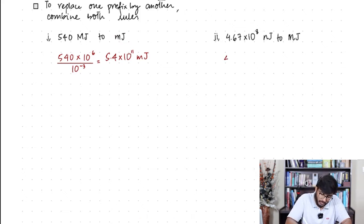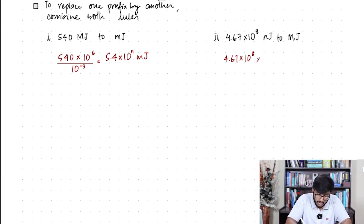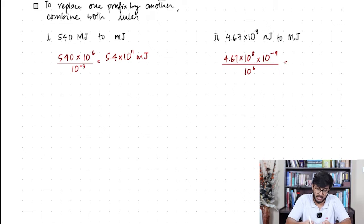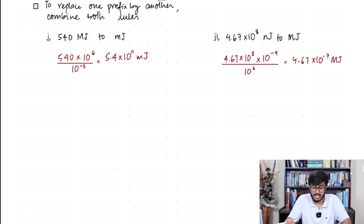Similarly, 4.67×10⁸ nanojoules needs to be converted into megajoules. First remove nano by multiplying by 10⁻⁹, then insert mega by dividing by 10⁶. So 4.67×10⁸ × 10⁻⁹ ÷ 10⁶ gives 4.67×10⁻⁷ megajoules.